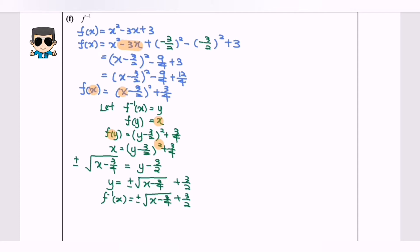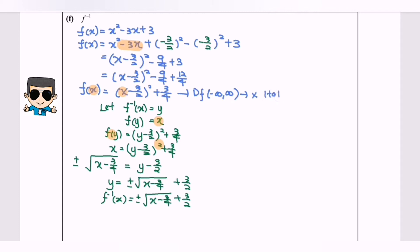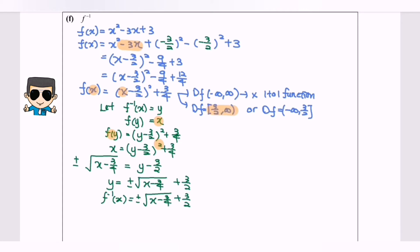Please take note. Previously, the domain for f, which is a quadratic, is negative infinity to positive infinity, so this is not a 1-to-1 function. If the situation is not 1-to-1, meaning f inverse does not exist. So for this case, in order to get a 1-to-1 function, the domain has to be restricted to either 3 over 2 to positive infinity, or negative infinity to 3 over 2. We can only choose either one.